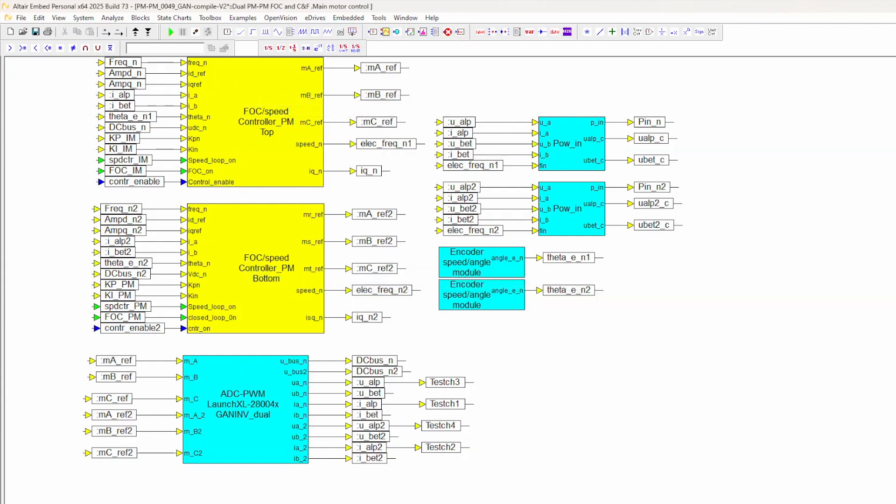The main motor control is what we're interested in this case, and that has two FOC controllers. One is FOC speed control and FOC torque, both of them for both machines. The ADC unit, PWM, measures all of the three currents and the four voltages, the low-pass voltages, and DC-bus voltage for each machine.